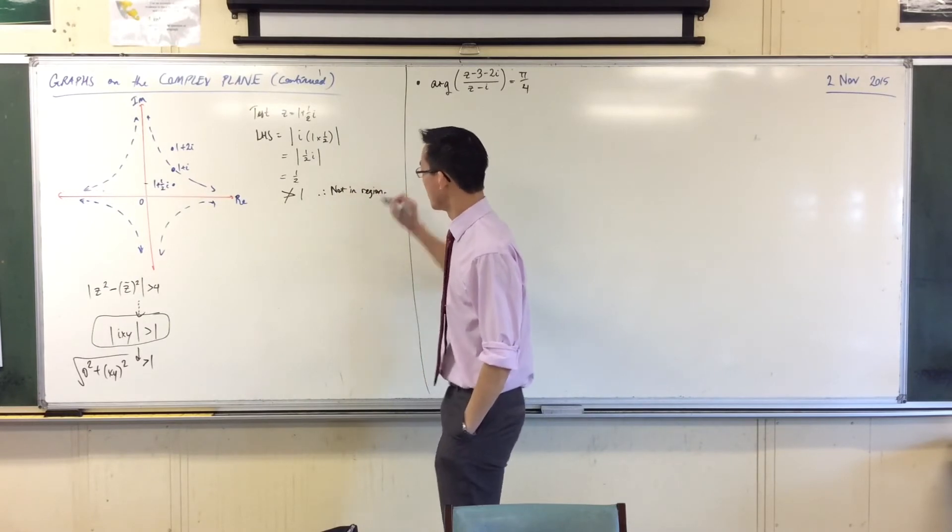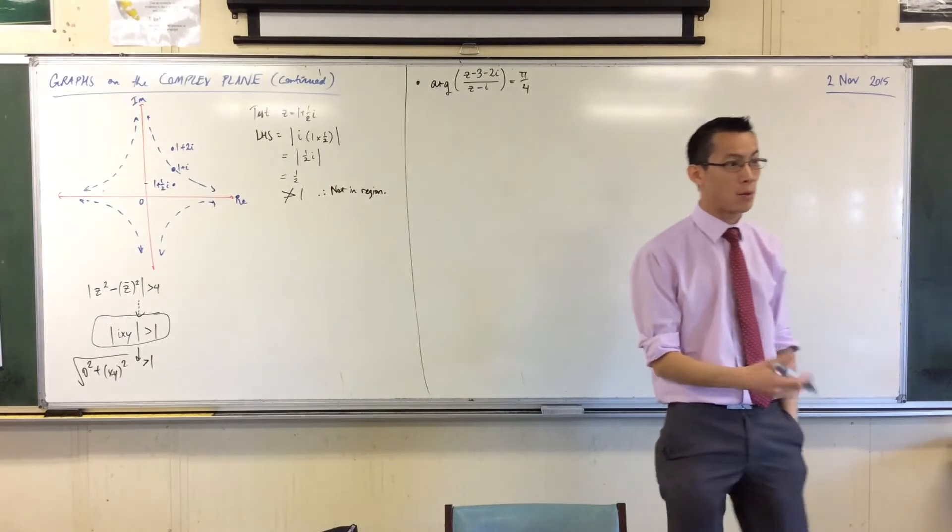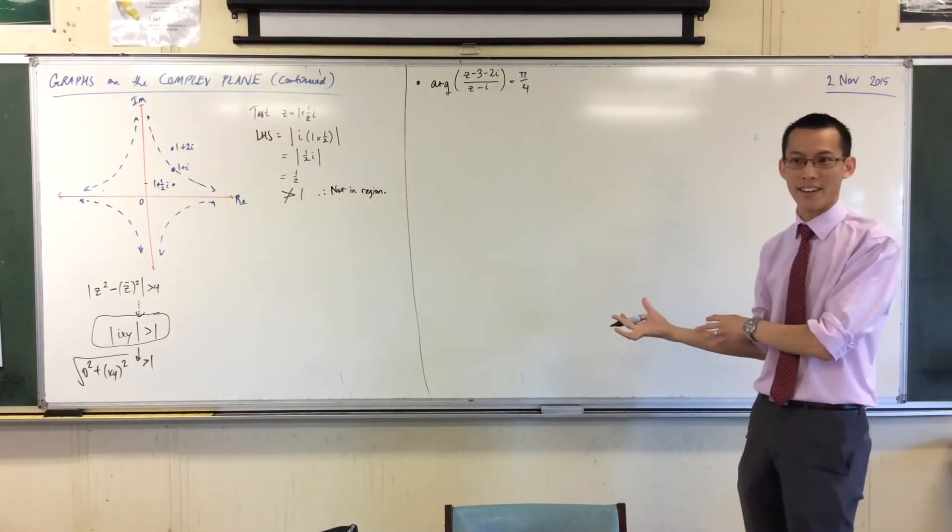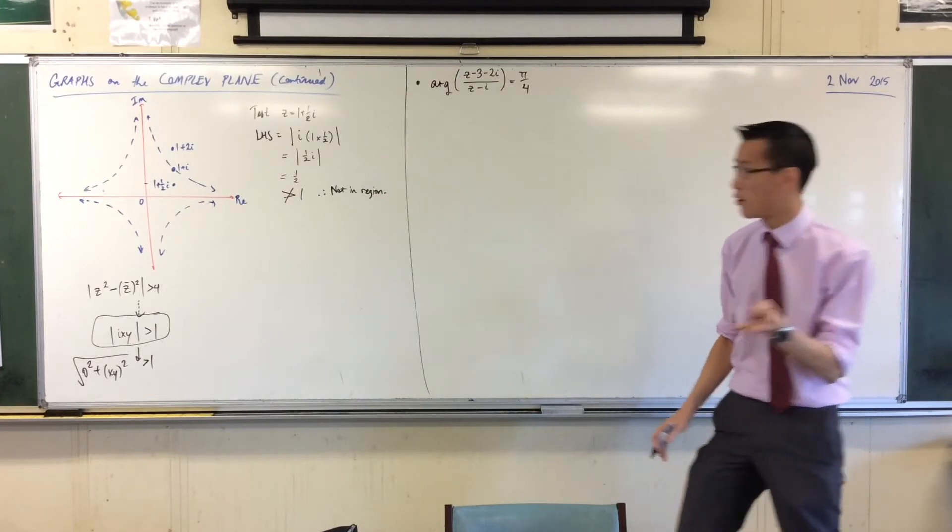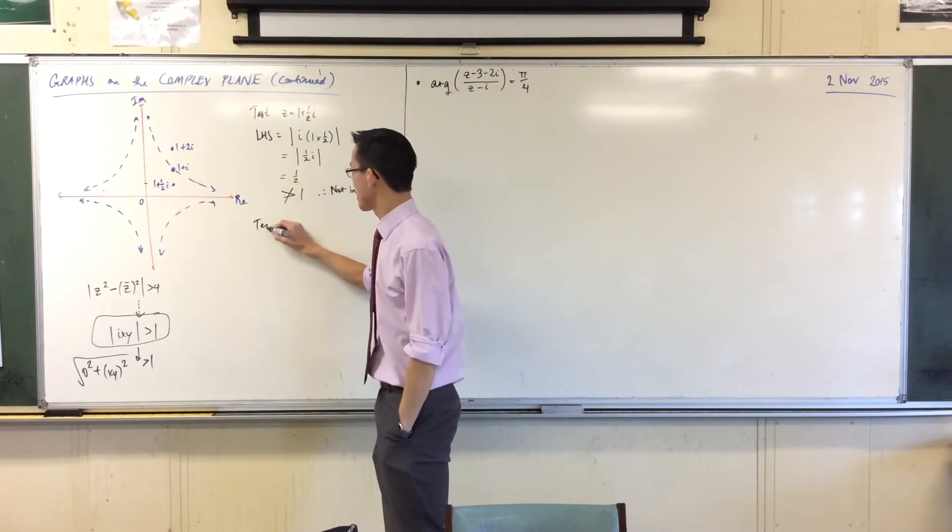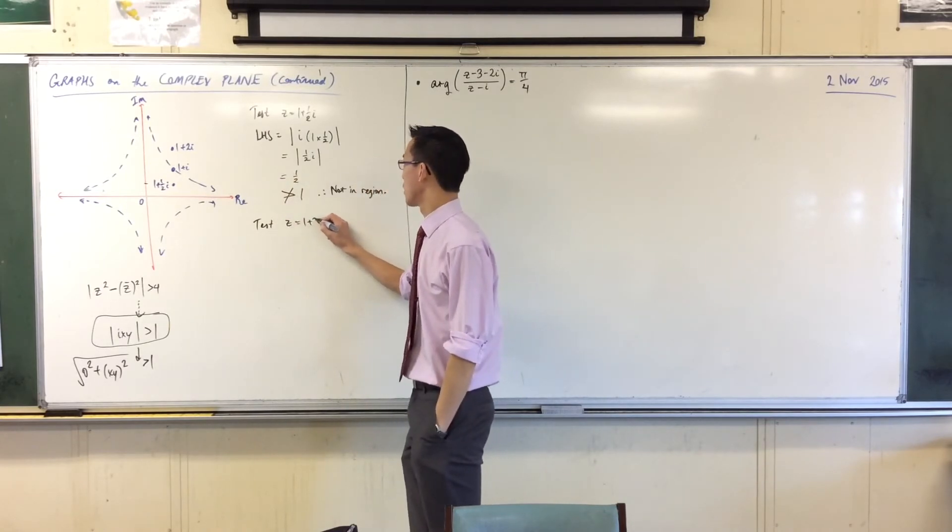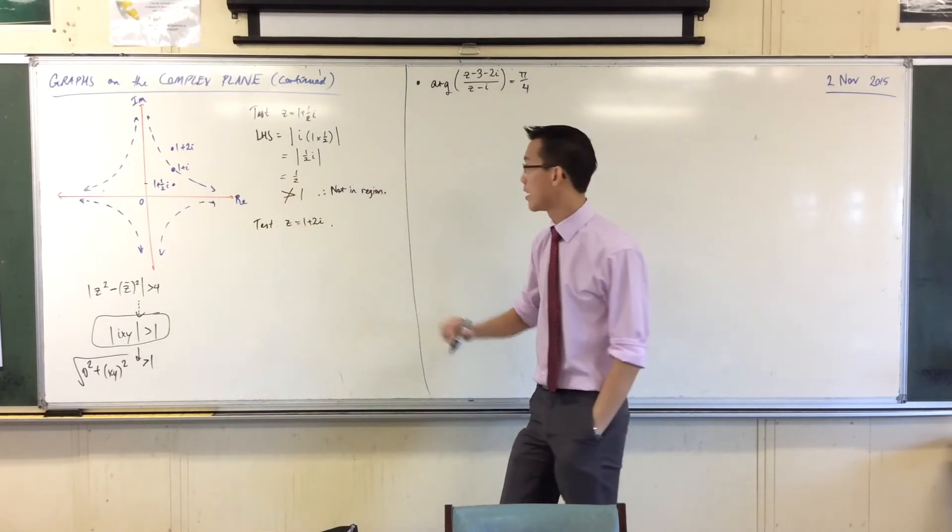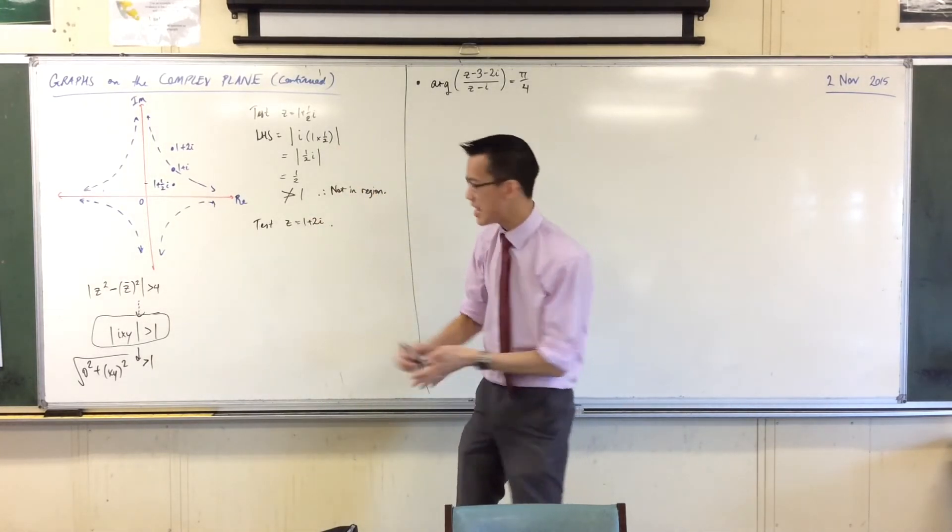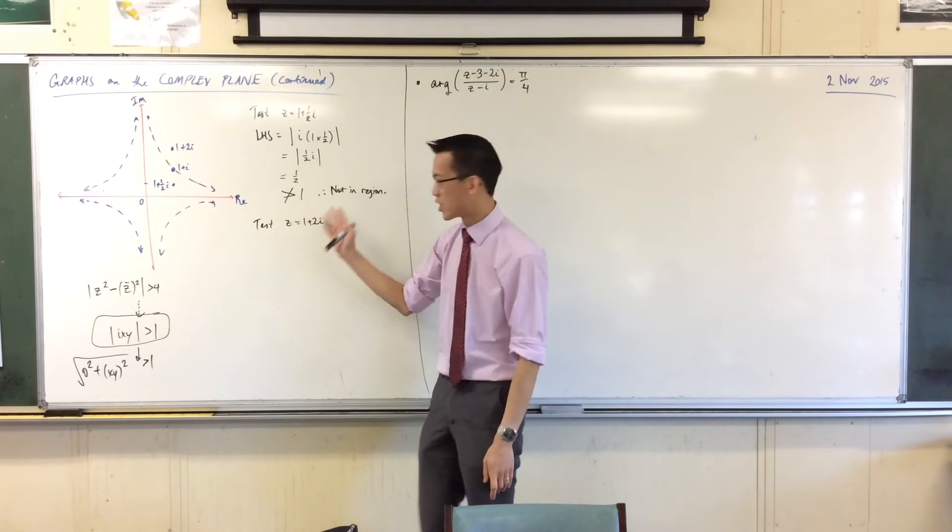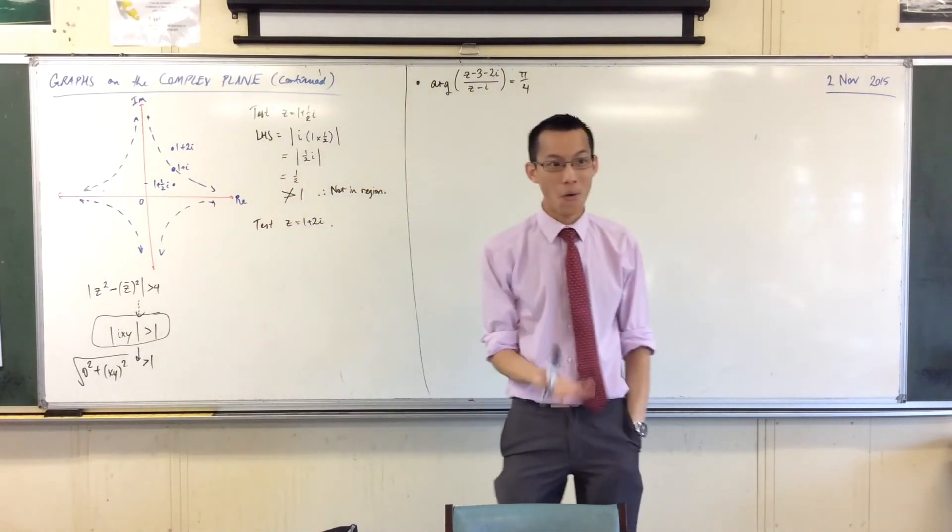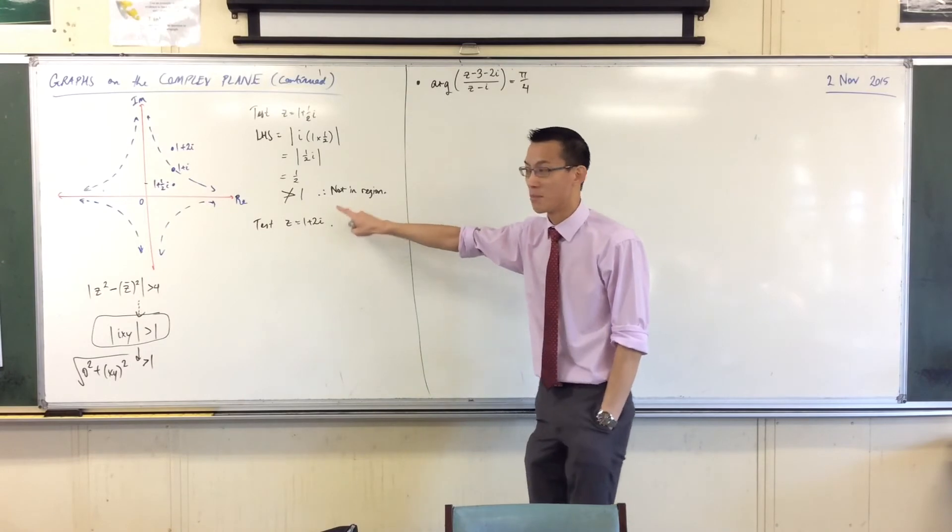Now, ordinarily, it would be probably sufficient for you to say, well, if I found a spot that's not in the region, it just must be the other side. But being that we're in complex number land, we might as well confirm by testing another point. And we already suggested this one. So I'm going to test z equals 1 plus 2i. I'm going to pop it back in here. And remember, I'm actually trying to see whether this inequality is true or not. I don't know whether it's greater than 1 or not until I've done my work on it.